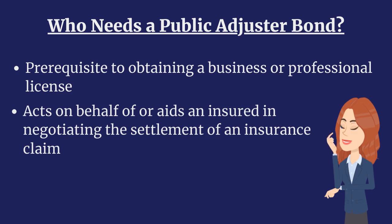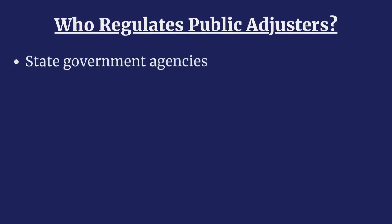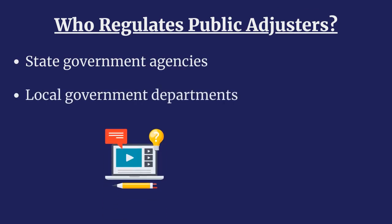Public Adjuster Bonds are required in 26 states. Hit the link in the video description to find your state-specific bonding requirement. State government agencies regulate Public Adjusters based on license laws written by each state's legislature. Governments enforce the law by instituting licensing requirements such as educational mandates and a surety bond.